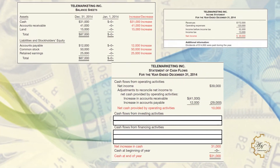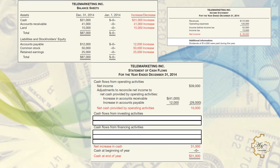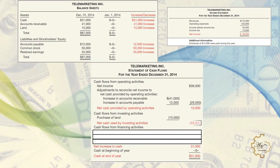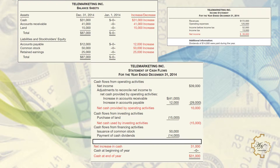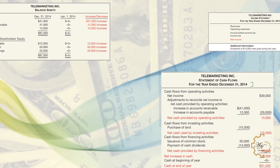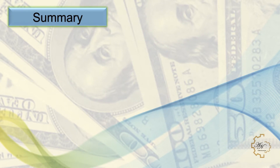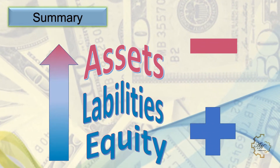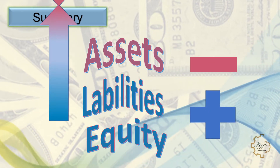Next, the company determines its investing and financing activities. Telemarketing Inc.'s only investing activity was the land purchase. It had two financing activities: common stock increased $50,000 from the issuance of 50,000 shares for cash, and the company paid $40,000 cash in dividends. Knowing the amounts provided or used by operating, investing, and financing activities, the company determines the net increase in cash. The increase in cash of $31,000 reported in the statement of cash flows agrees with the $31,000 increase calculated from the comparative balance sheets.